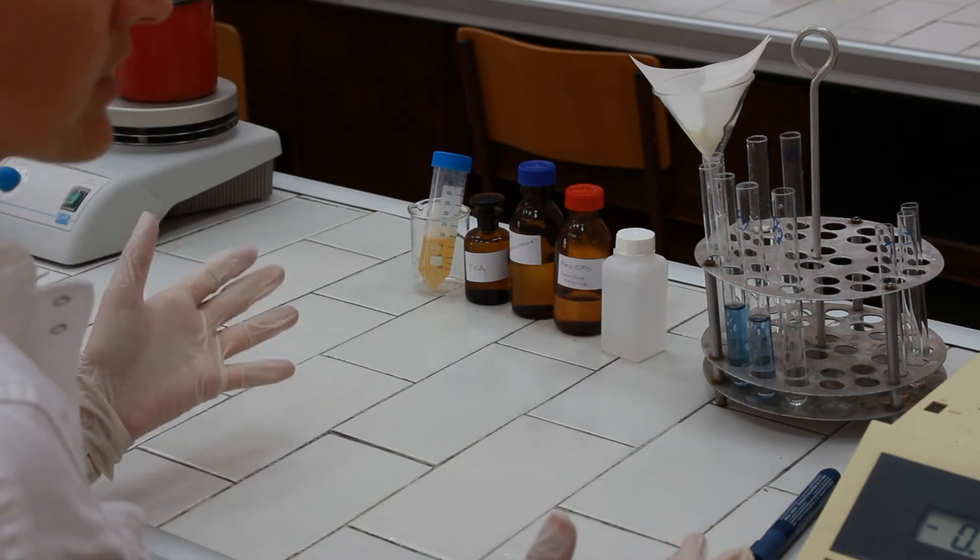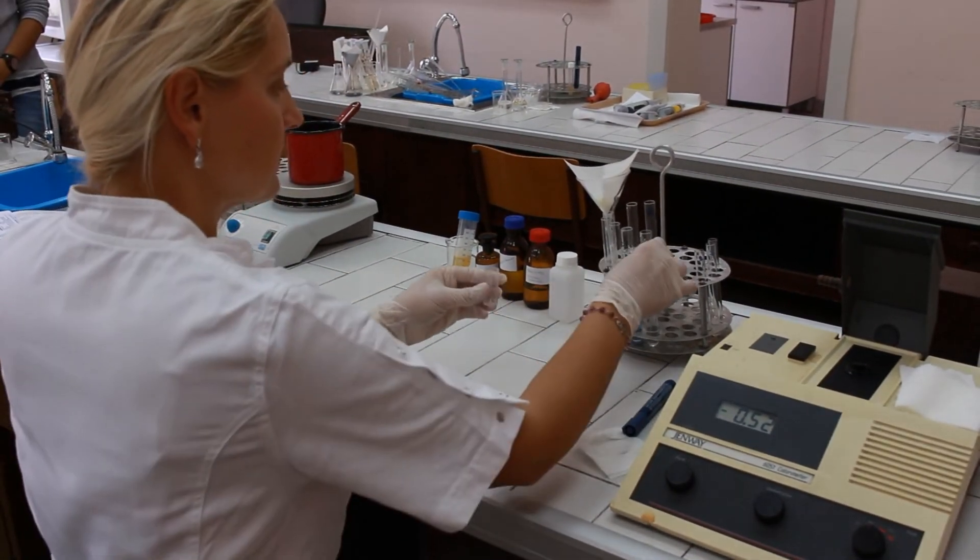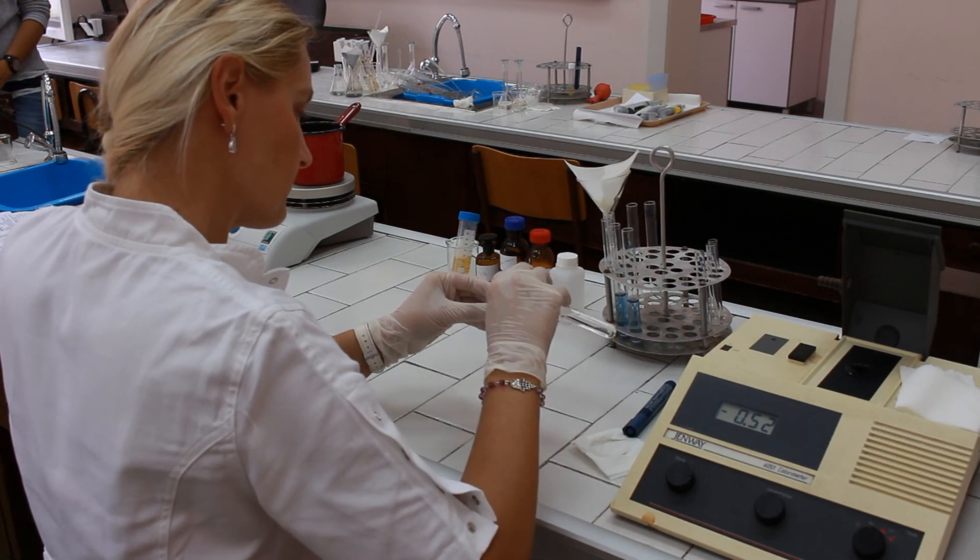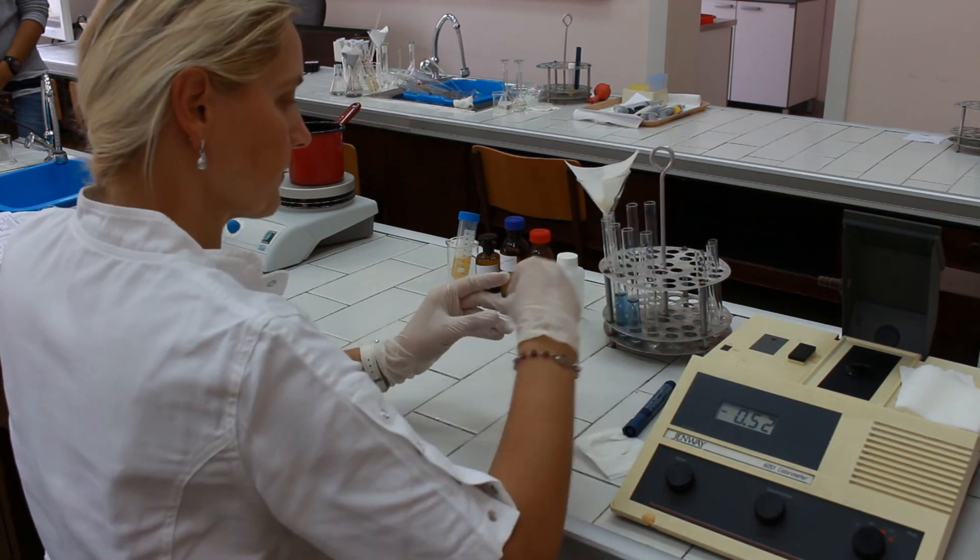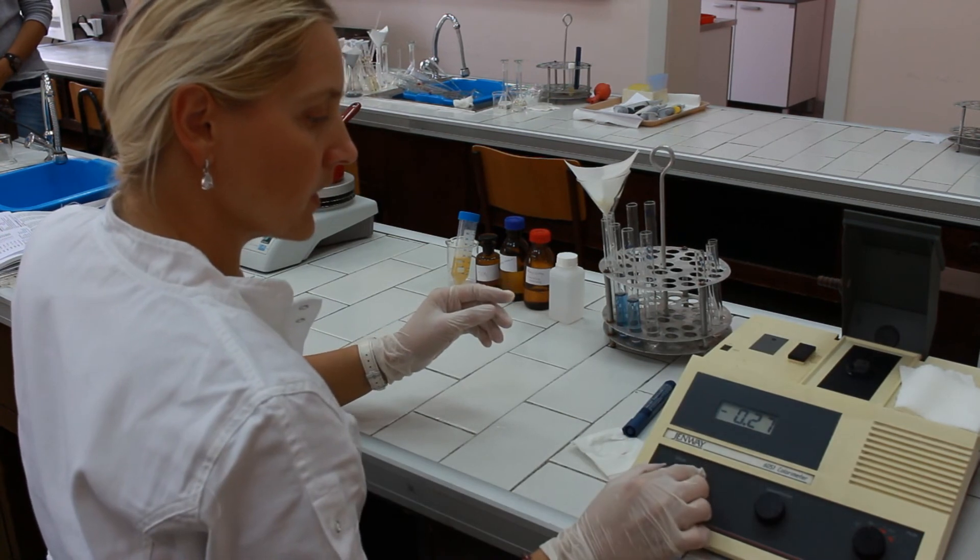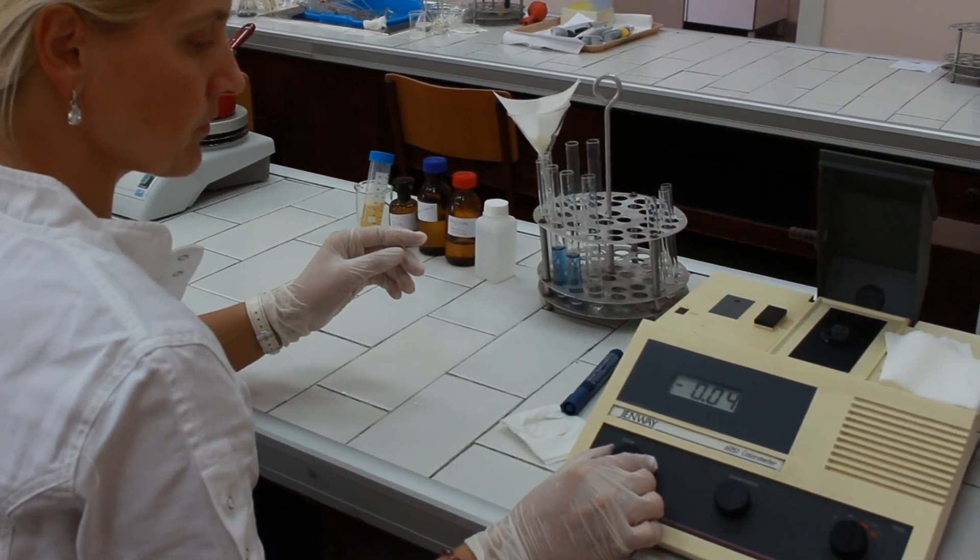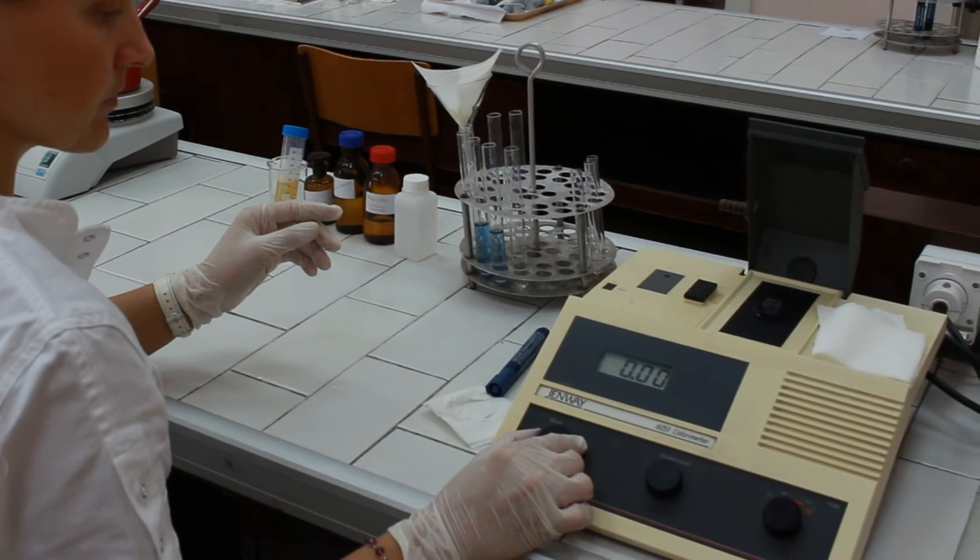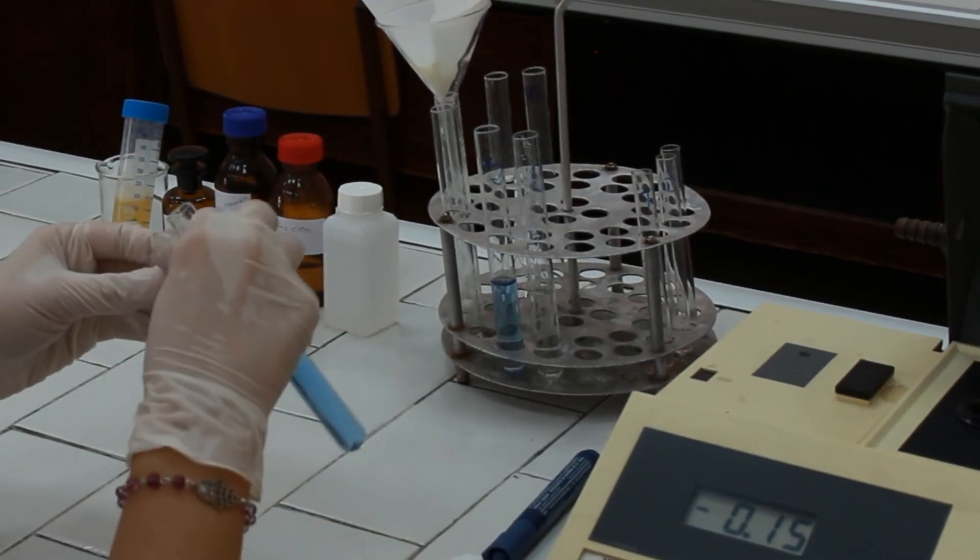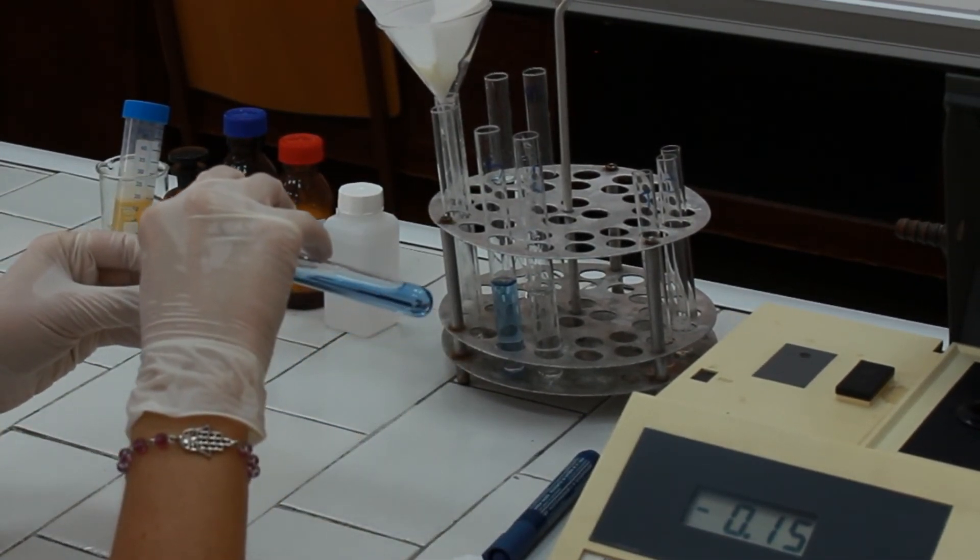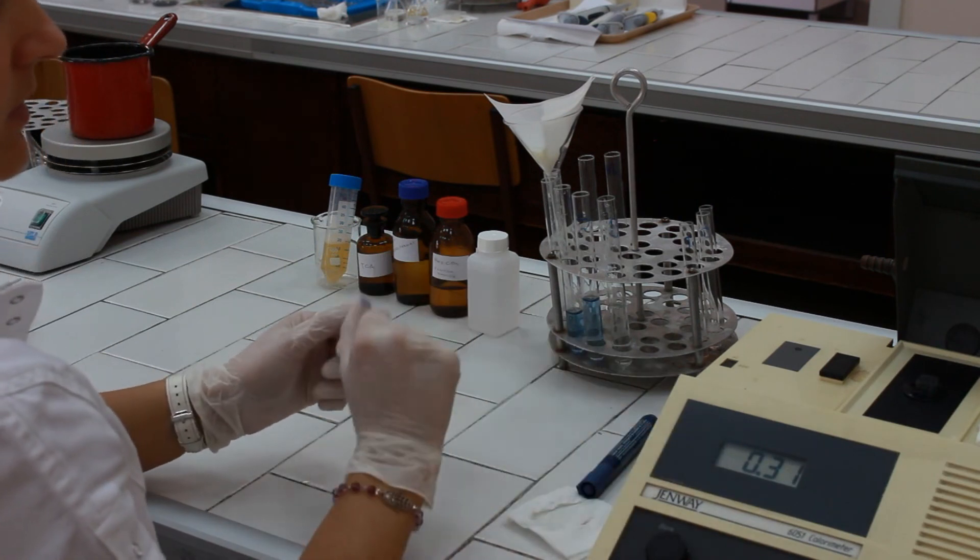Absorbances should be read at 600 or 710 nanometers. After adjusting the wavelength, we're going to pour the blank solution and adjust the instrument to zero. Remove the blank solution, take the T test solution, and read the absorbance.